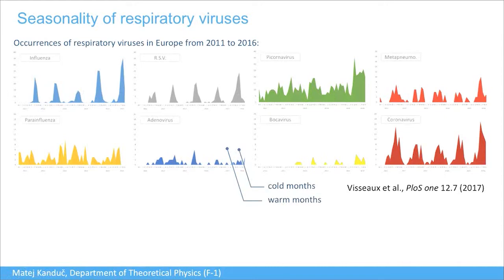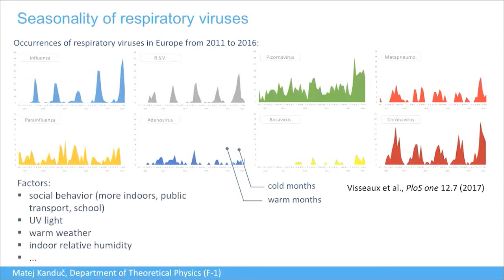The reasons for the observed seasonality of respiratory viruses are several and highly debated. Among them is social behavior: we spend much more time indoors in winter, use public transport more, and schools are open in winter but not summer. Environmental factors also contribute, like UV light and warmer weather. One very important factor is indoor relative humidity, which is the central part of this story.